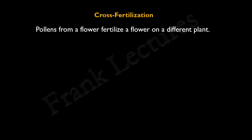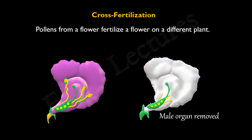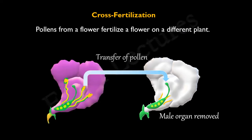When pollen from a flower fertilizes a flower on a different plant, it is known as cross-fertilization. Mendel also cross-fertilized pea plants in his experiments. For this, he first removed the male organs — that is, stamens — from the flower of one plant. By doing this, he was able to prevent self-fertilization in that plant. Then he manually pollinated this flower with pollen from a flower of a different pea plant. By cross-fertilizing different varieties of pea plants, Mendel analyzed the results.